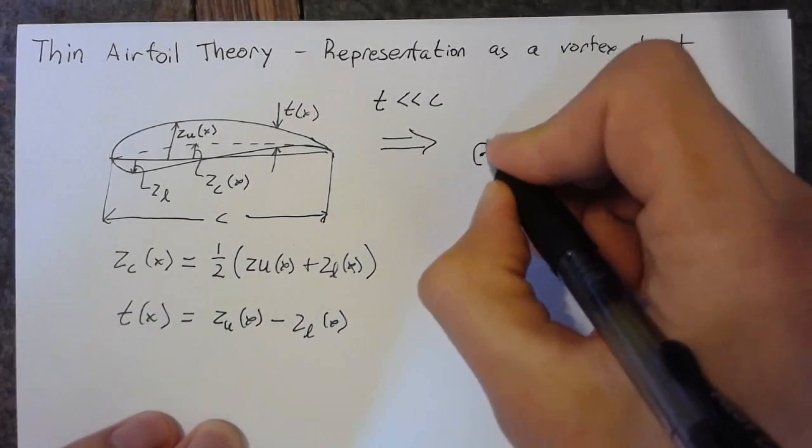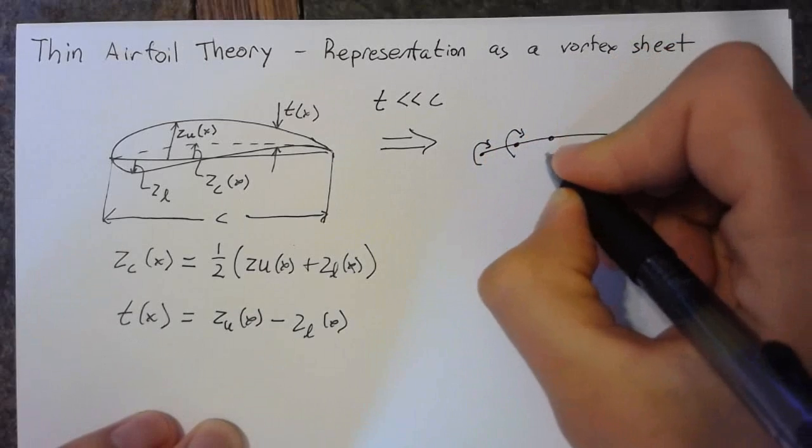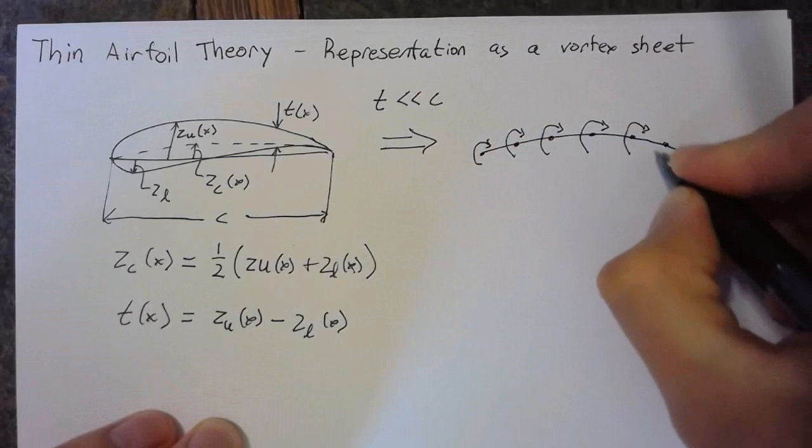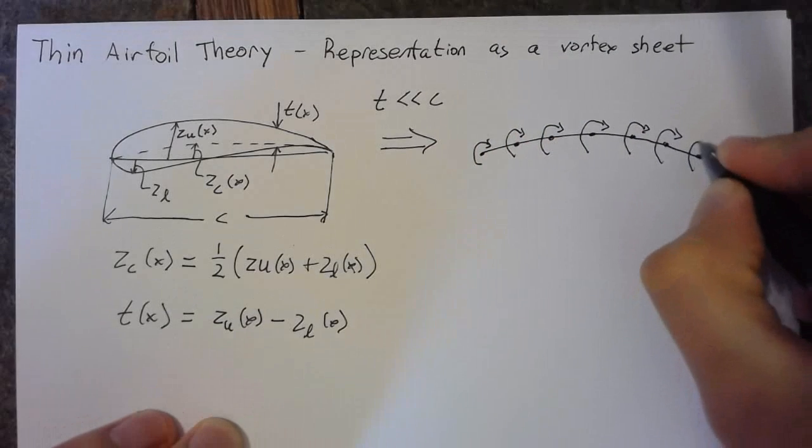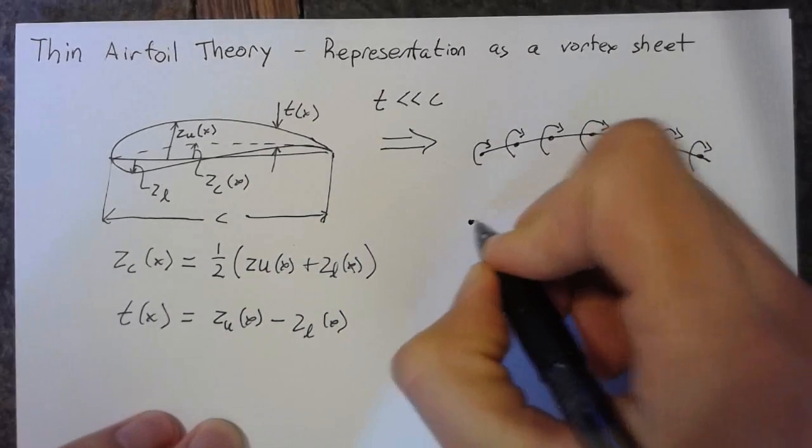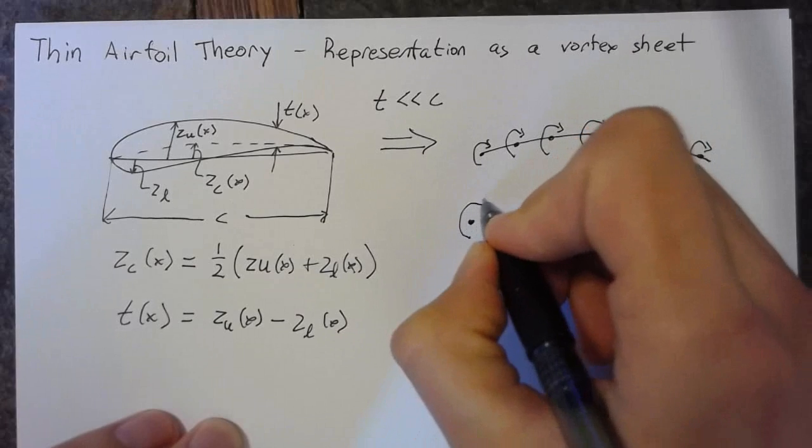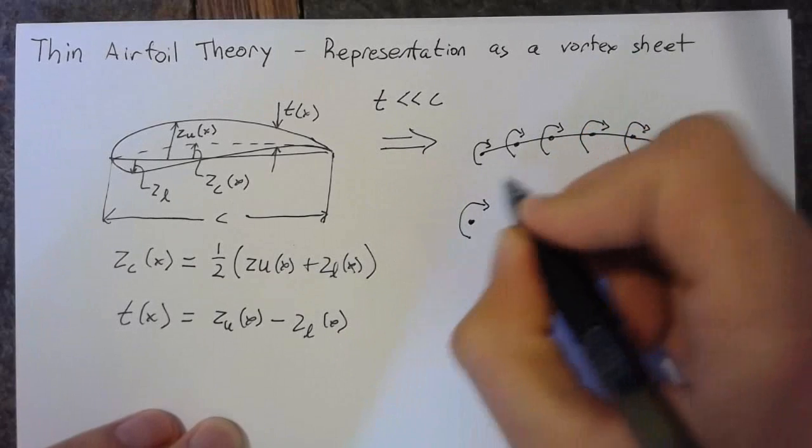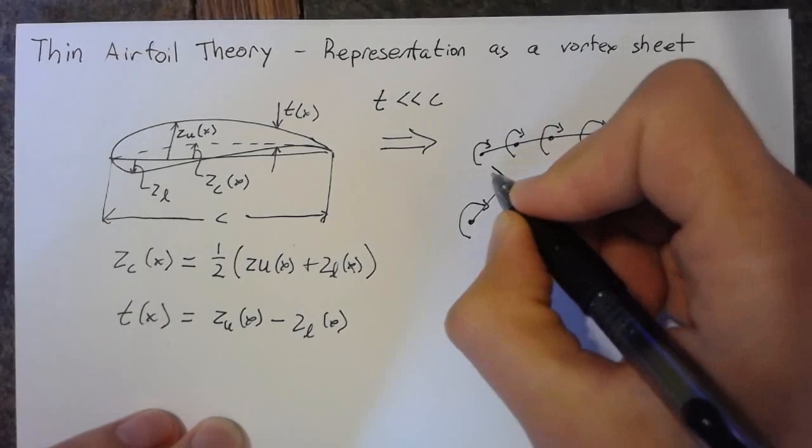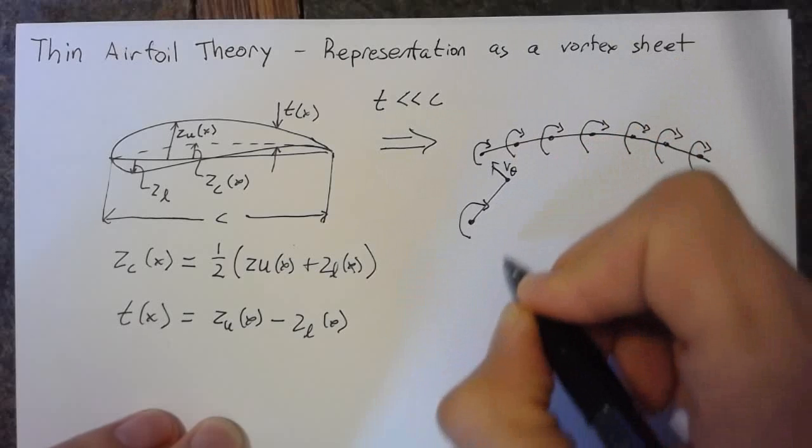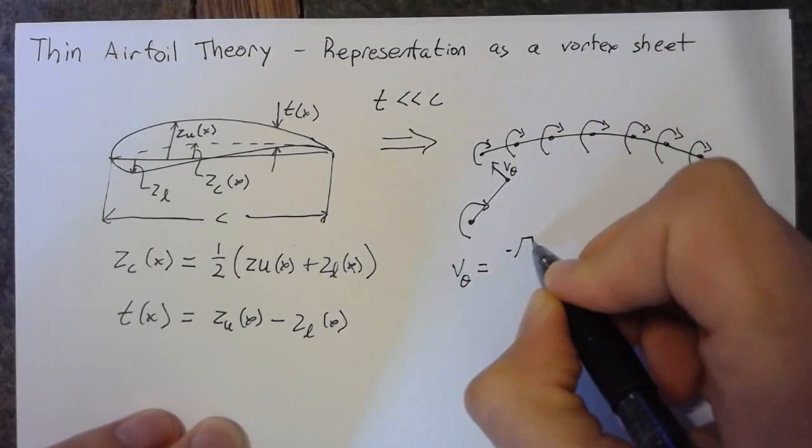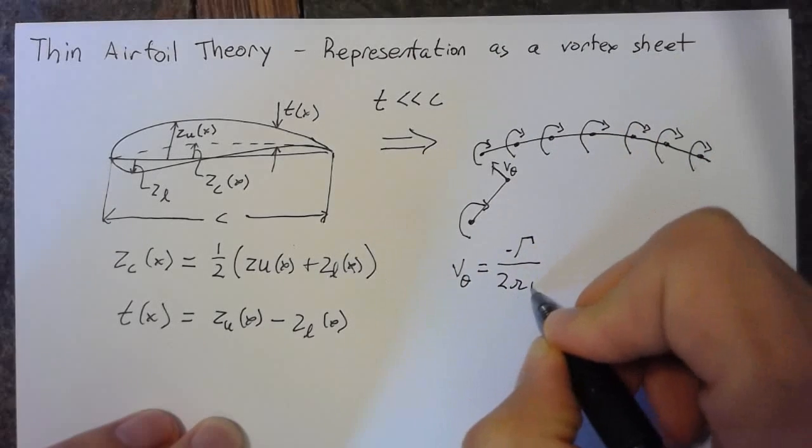And what I mean by a vortex sheet is that at every point along the camber line, some vorticity is present. Now, in chapter 3, we talked about a point vortex, which was a singularity at a single point which caused some velocity v theta. And we could define v theta as negative gamma over 2 pi r.